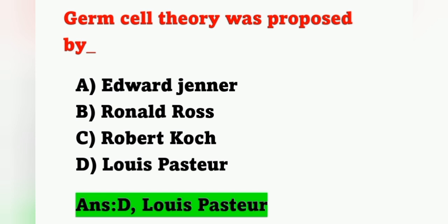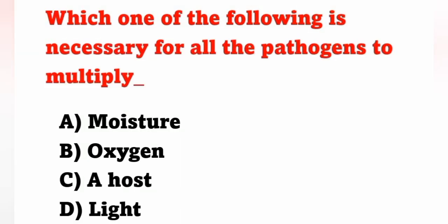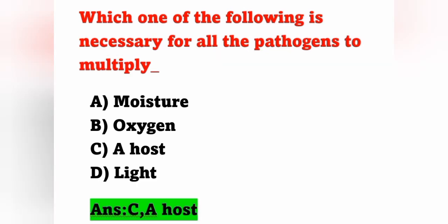Next question: which one of the following is necessary for all pathogens to multiply? Option A: moisture, option B: oxygen, option C: a host, option D: light. Which is the first factor for all pathogens to multiply? It is a host. Option C is the correct answer. Moisture and light are important, but a host is the necessary factor.